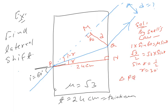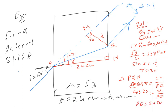Triangle PQN में: cos R = 24 / PQ → cos 30 = 24 / PQ → √3/2 = 24 / PQ → PQ = 24 × 2/√3 = 48/√3 = 16√3। तो PQ हमें मिल गया।